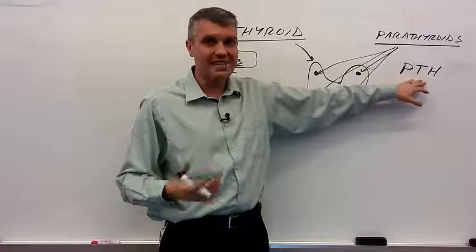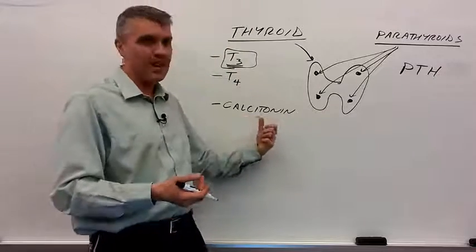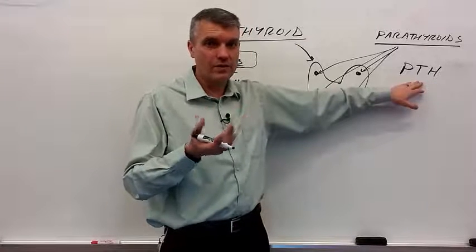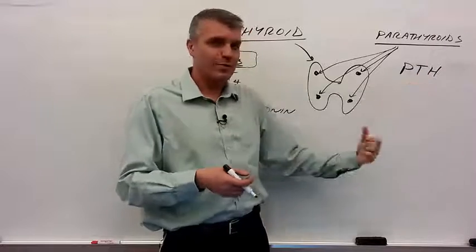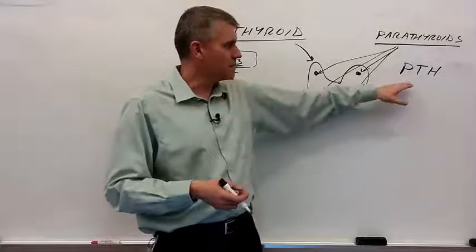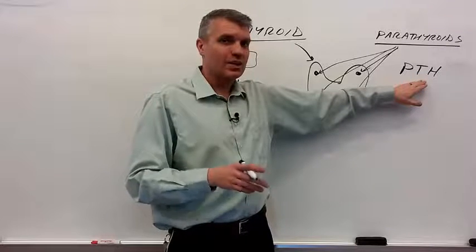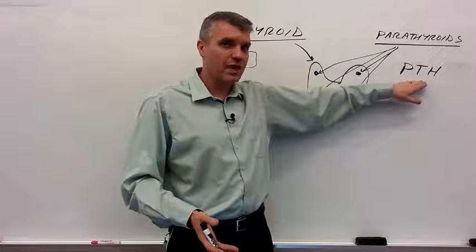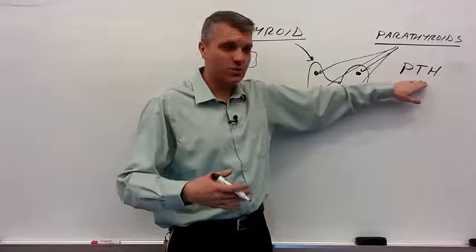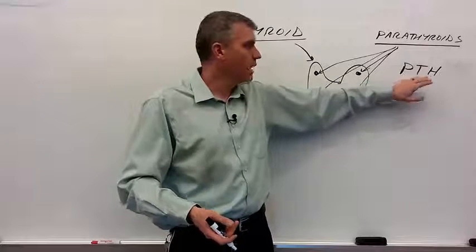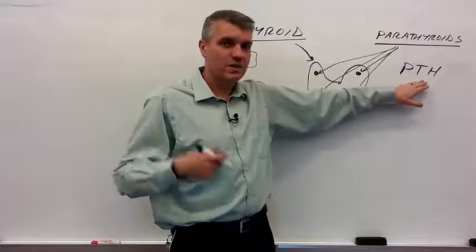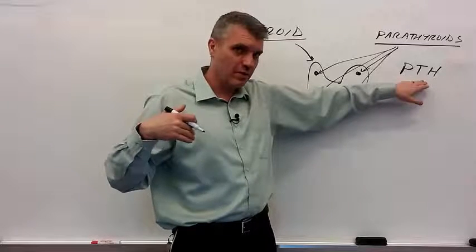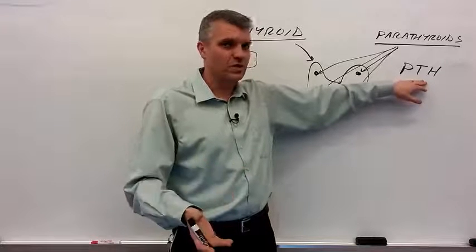Parathyroid hormone is an antagonistic hormone to calcitonin, so it has the opposite effect. Parathyroid hormone causes an increase in blood calcium levels. It does that in almost exactly the reverse way that calcitonin has its effects. Parathyroid hormone encourages the small intestine to absorb more calcium from food, discourages the elimination of calcium from the bloodstream by the kidneys so you retain more calcium and don't lose it in the urine, and encourages the bones to resorb calcium, to release calcium from bone tissue back into the bloodstream.